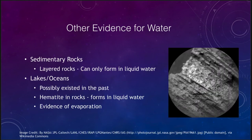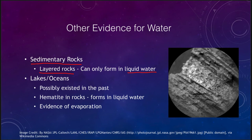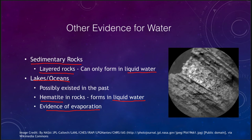Other evidence for water includes sedimentary rocks. Sedimentary rocks on Earth require liquid water to form and are layered rocks. We did not see any when we talked about the Moon, Mercury, or Venus, but we do have some here on Mars — it is the only place other than Earth where we have found sedimentary rocks. We have also seen evidence of lakes and oceans that possibly existed in the past, including hematite in rocks which forms only in liquid water, and evidence of evaporation. Putting all these pieces together, we can say with very good confidence that liquid water did flow on Mars in the past, and that leads to the idea that there could have been life at some point.